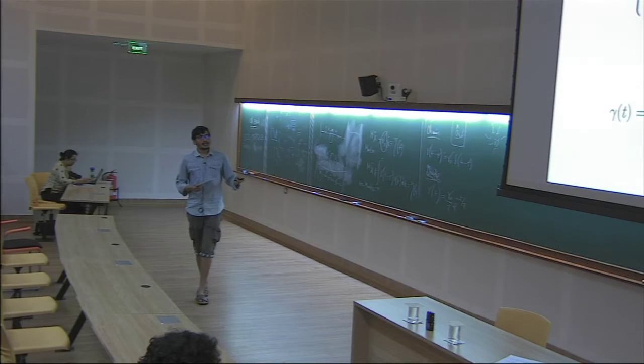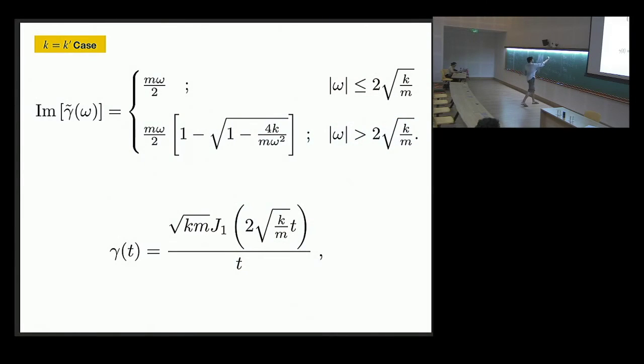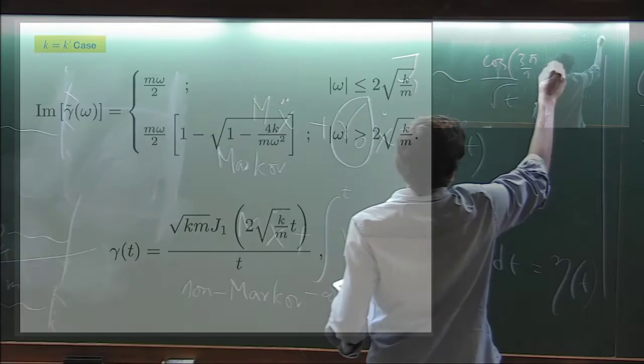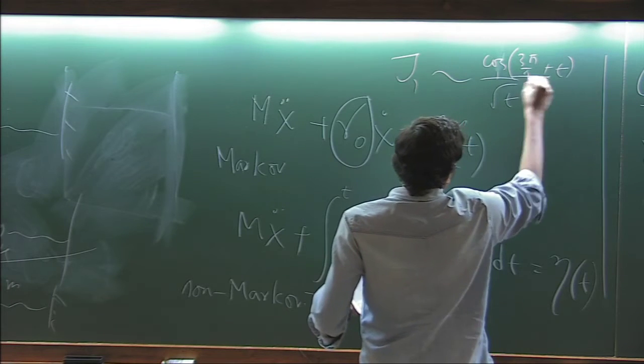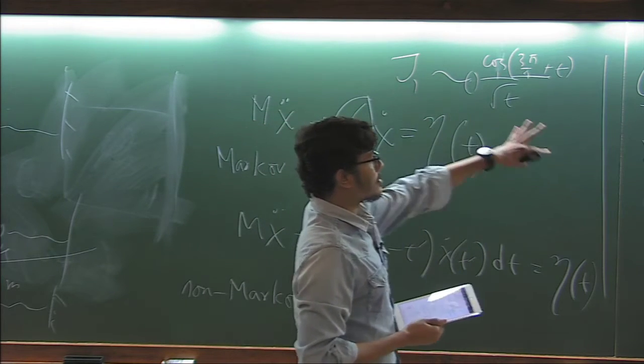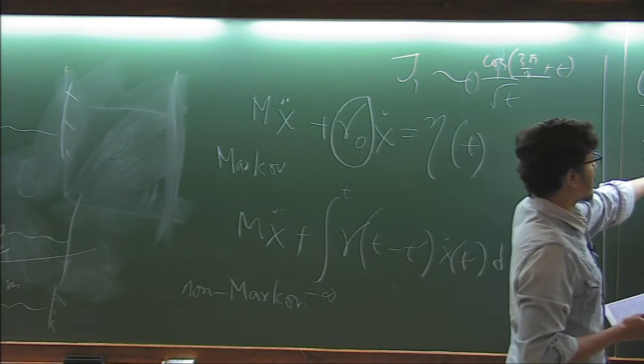And you can see this gamma t is proportional to the Bessel function. So we know that j1 basically goes as 1 by root t for large t, and there is cosine 3 pi by 4 plus something.